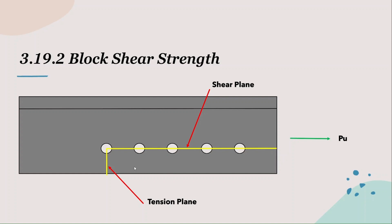Here you can notice that the shear plane is much greater in length than the tension plane, meaning there is more steel to support the shear than tension. Hence in this situation, the tension plane is the weaker plane and the shear plane is the stronger plane. Every section will have a strong and a weak plane according to its dimensions and hole locations. Now let's discuss how the stresses are distributed between them.